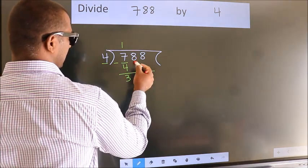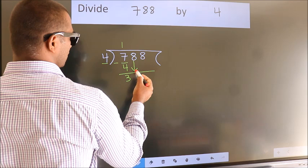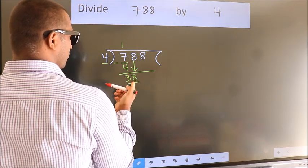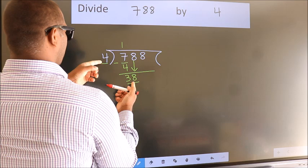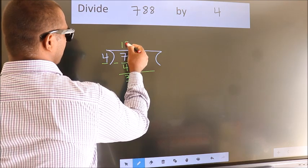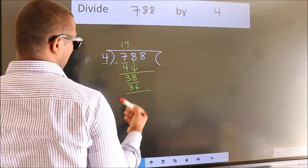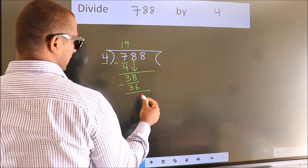After this, bring down the beside number. So, 8 down. So, 38. A number close to 38 in 4 table is 4 nines 36. Now, we subtract. We get 2.